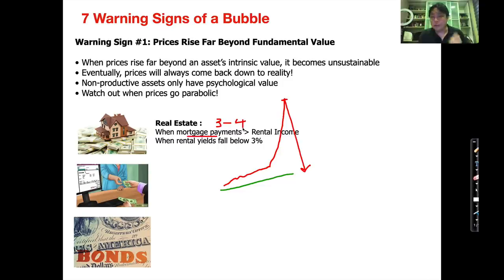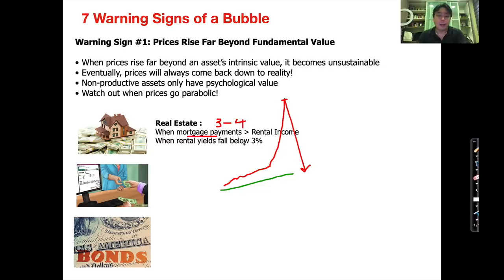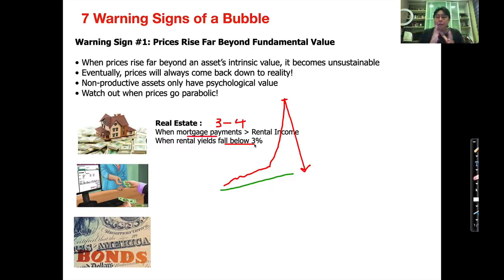Another clue is to look at the rental yield of a property. A property's rental yield should be about 5%, 6%, or 7% — that's a healthy range. But the moment the rental yield falls way below 3%, going to 2% or 1%, that tells you property is too expensive and it's in a bubble. So in every asset there are ways you can measure using these metrics. When you invest in stocks you're buying businesses, so how do you value a business? A business is a money-making machine, and what the machine is worth is based on how much cash it can generate over its lifetime.